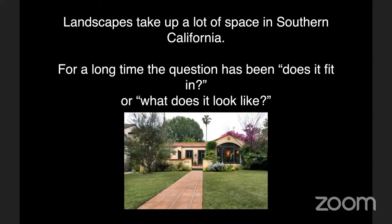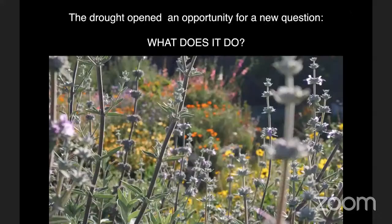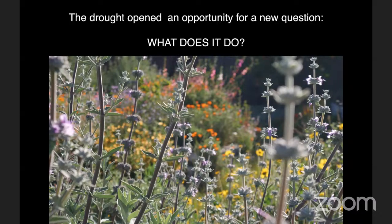For a long time, especially in front yard landscapes, the question has been: does it fit in with the neighbors, or what does it look like? And what it looks like is important — we should all have beautiful gardens. But the last series of droughts in Southern California have really opened up an opportunity for a new question and a much wider diversity of front yard landscapes, even in homeowner association situations. The really interesting new question, in addition to whether it's beautiful, is what do our landscapes do for us?